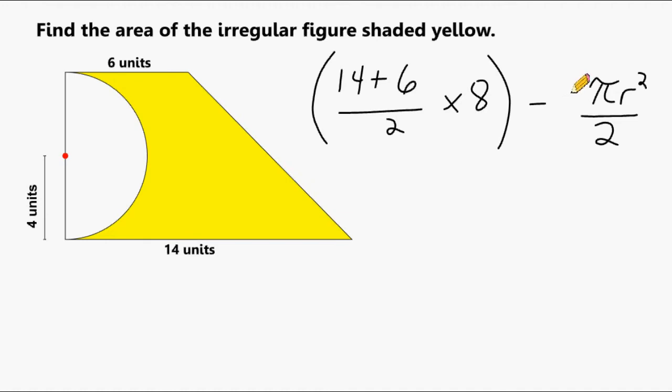All right, next we're going to take π and substitute that with 3.14. And then we're going to take the radius and substitute that with 4.